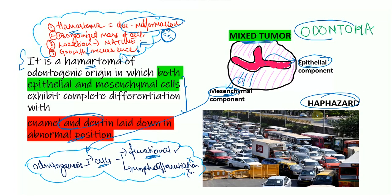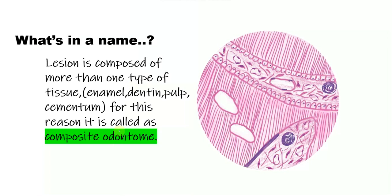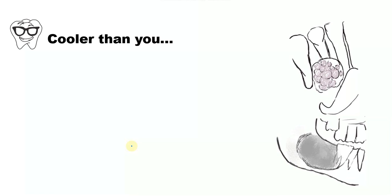So it lays down enamel and dentin in a haphazard manner. All in all, this is a hamartoma — a mixed tumor with epithelial and mesenchymal cell differentiation where enamel and dentin are laid down in an abnormal position. It is called a composite odontome because there is more than one type of hard tissue formed. Looking at the diagram, you see enamel spaces covered by enamel, scattered dentin, cementum, and pulp — more than one type of tissue.